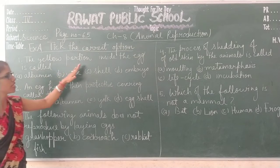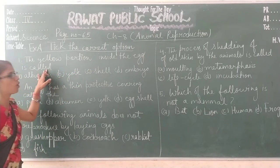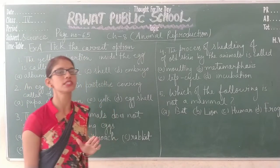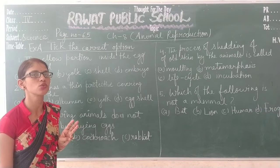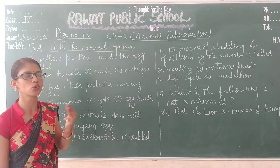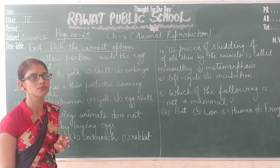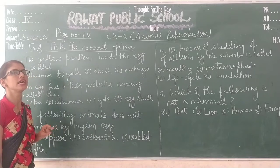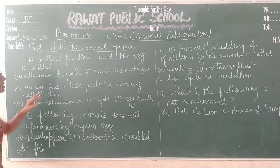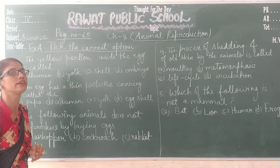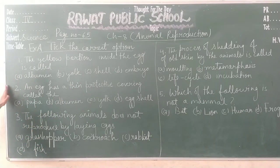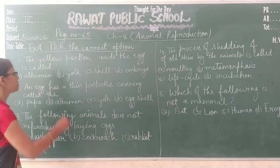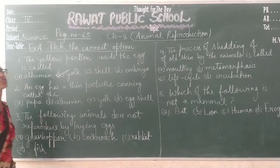Question 1 is: the yellow portion inside the egg is called. When we discussed the structure of the egg, we learned there are 3 layers — the outermost layer is the egg shell, which is a protective covering. Below it is a white jelly-like substance known as the albumin, and below the albumin is a yellow substance known as the yolk, which provides nutrition to the developing animal. Option B, yolk, is the correct answer.